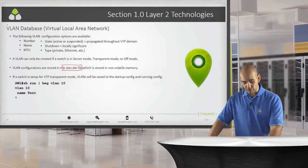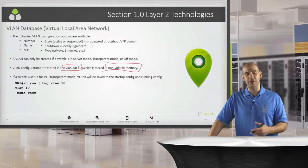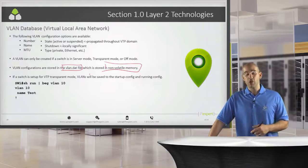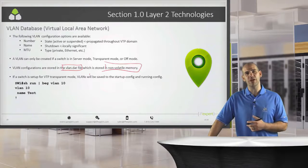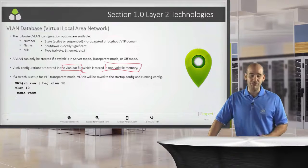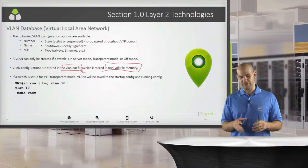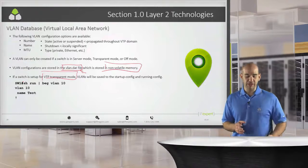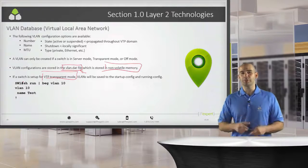This file is going to be stored in our non-volatile memory, or what we commonly call our NVRAM. We can change where this is stored, and I'll show you how to do that, but by default it's going to be the VLAN.dat file. What we need to be aware of is that VTP is actually going to have a say in more than one place where we store our VLANs.